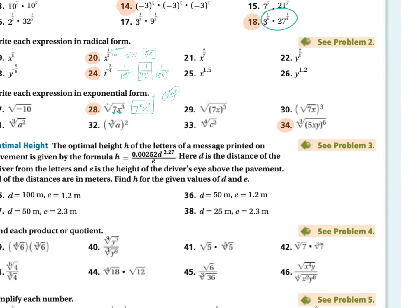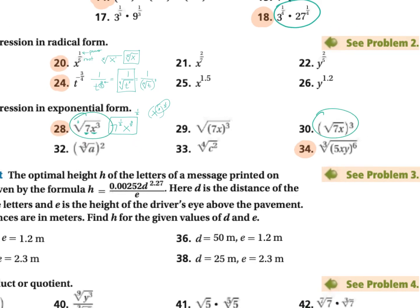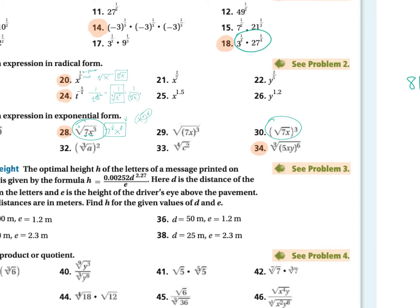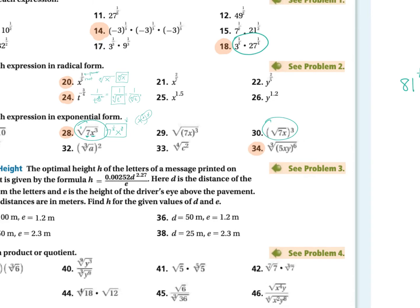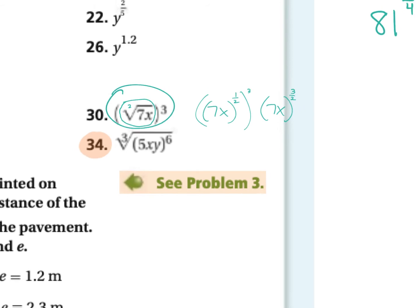Let's do number 30 while we're at it, because it's very similar — but notice the difference. Number 30 is taking the square root of seven X to the third power as a whole. So if we simplify, we're saying seven X to the one half power is the same as this, but then we need to take that whole thing to the third power. So this is seven X to the three halves power. You don't need to distribute the three halves to both of them — the parentheses is doing that for you. Just leave it like that.